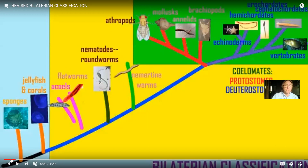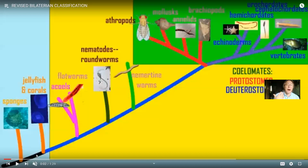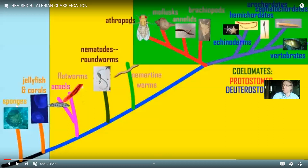I apologize for how this is going to start. The other biology instructors that I work with know this is a bad topic because I, more than anyone else that I know, get angry with the classification of worms. So I'm old, and when I studied biology, this was how invertebrates were classified. You had the sponges, which were classified as the earliest branch of animals and the most primitive. They are multicellular, but they lack tissues.